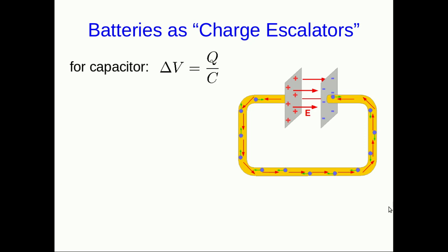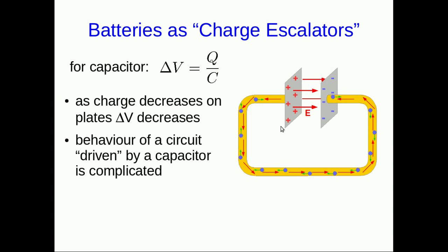But for various reasons, it's time to leave behind looking at capacitors as the primary things that we think about pushing charge through wires. Remember that for a capacitor, the voltage across it is proportional to the charge on the plates. And so as current flows, charge is leaving the plates and the charge on the plates decreases. As the charge decreases on the plates, the voltage will decrease. This leads to a somewhat complicated situation because now you have a changing voltage which is driving your current.